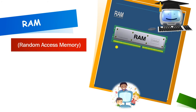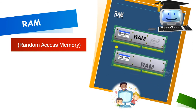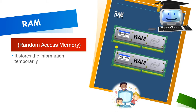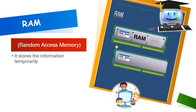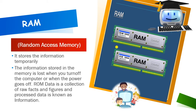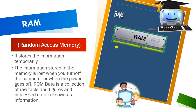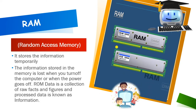RAM — the full form of RAM is Random Access Memory. On the right-hand side, you can see how RAM looks like in the CPU. RAM stores data and information temporarily — it stores data for a shorter period of time. The data stored in RAM is lost when you turn off the computer or the power is switched off. When you shut down your computer, whatever data is stored in this memory, it all gets lost.